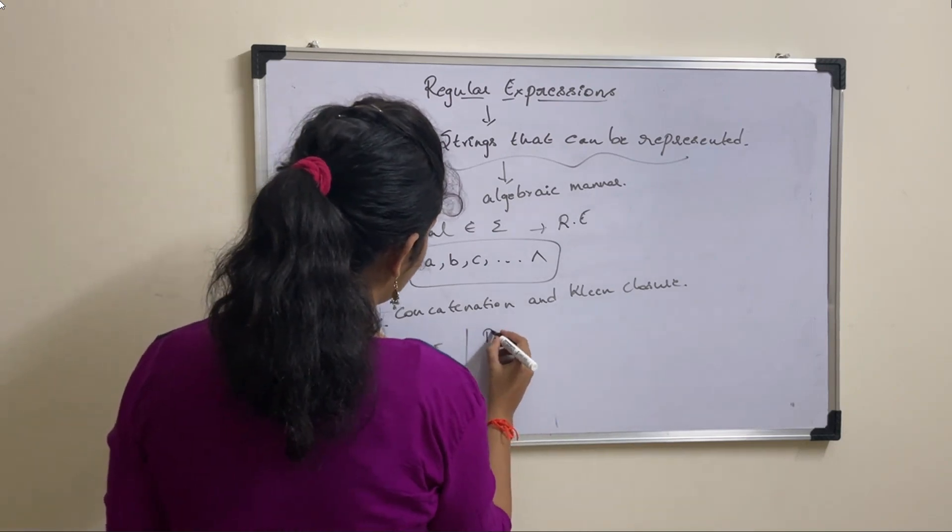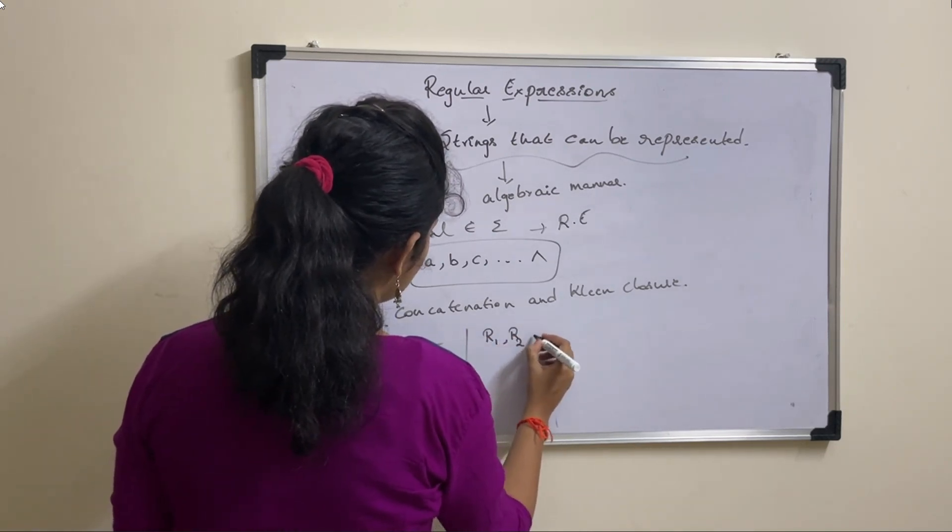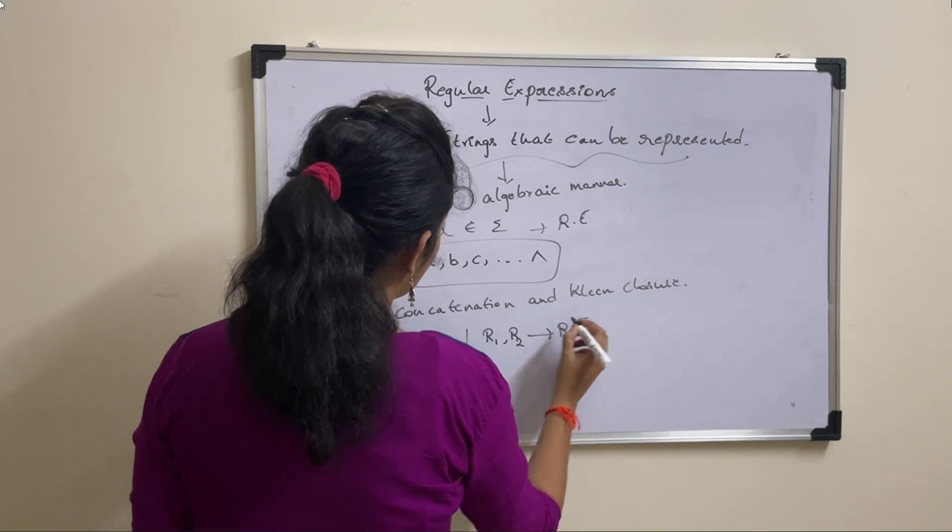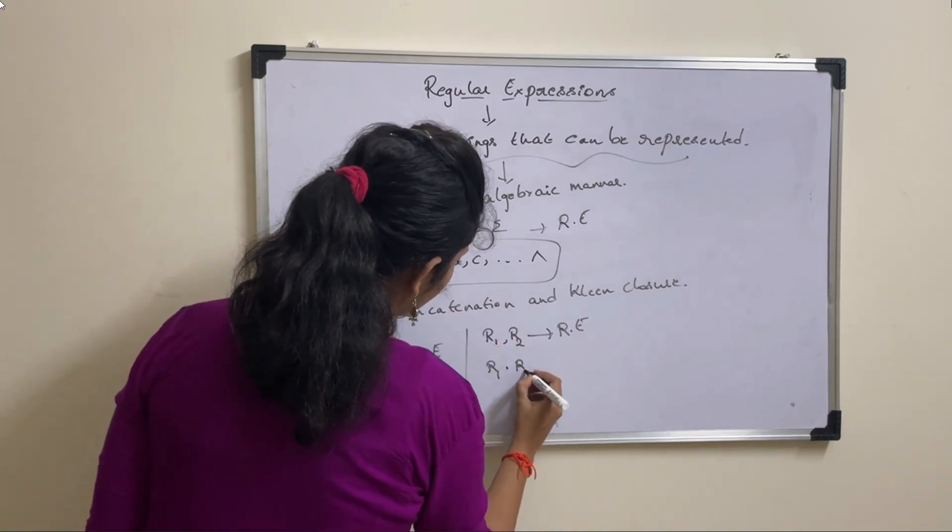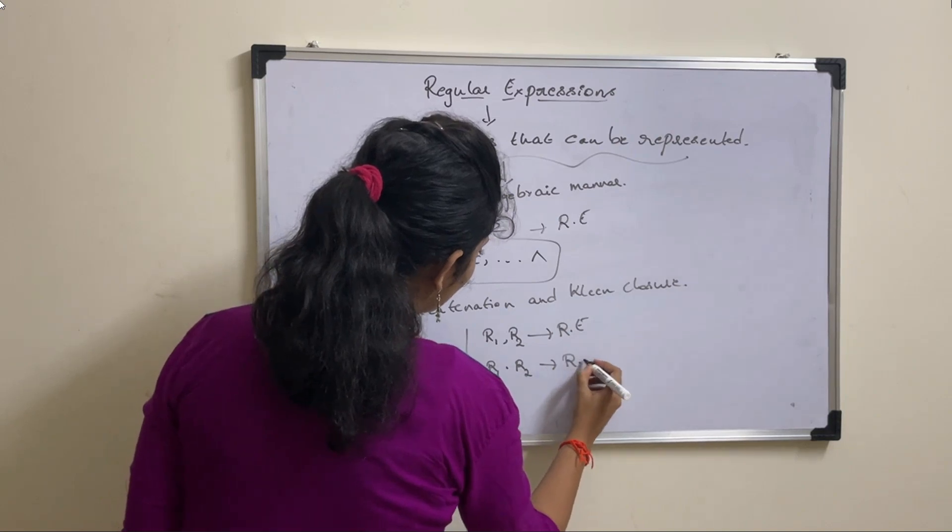Similarly for concatenation, if R1 and R2 are two regular expressions, then concatenation can be represented with dot. R1 dot R2 is also a regular expression.